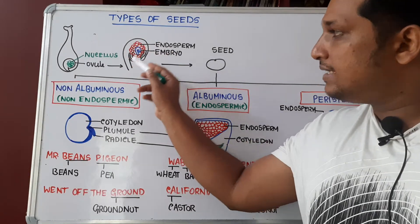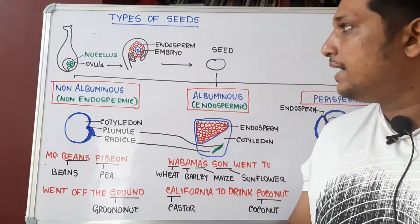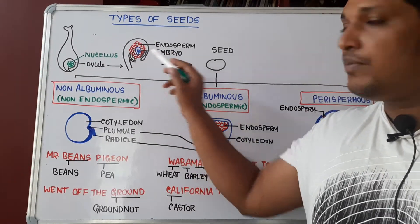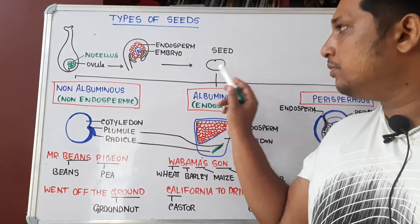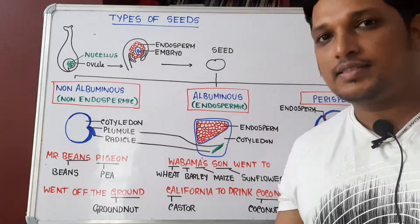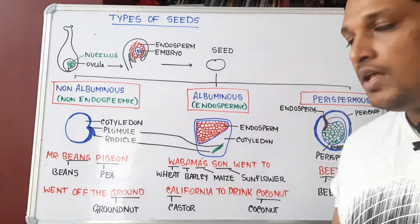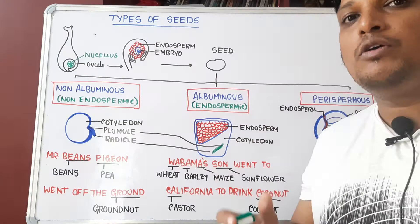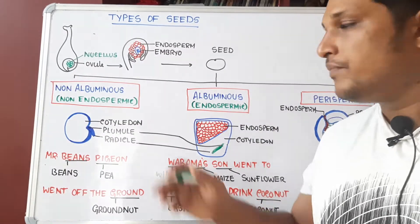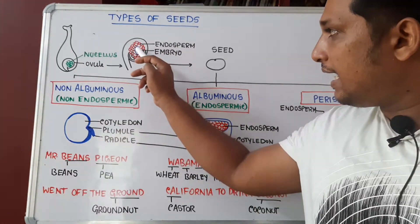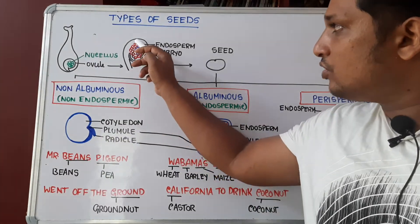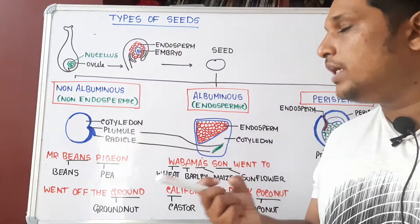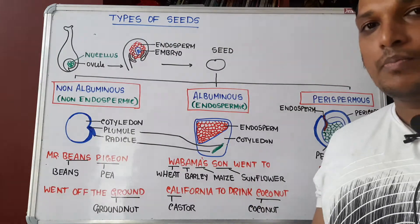The regions around the endosperm — the integuments — harden up to form a seed. As the embryo develops into a future plant, it consumes the food stored in the endosperm.